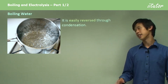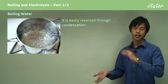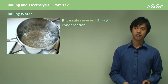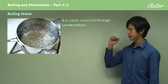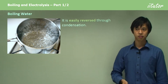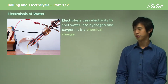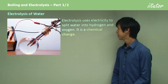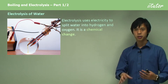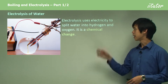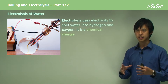Boiling is also easily reversed — I can easily turn steam back into water if the steam hits a cold surface, so I can condense it really easily. Electrolysis of water, on the other hand, uses electricity to split the water molecule into hydrogen and oxygen gas.